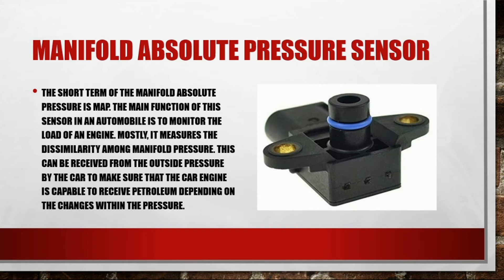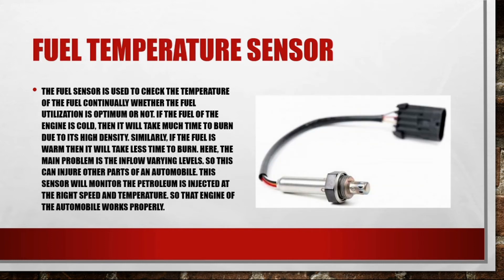The manifold absolute pressure sensor, or MAP sensor, has the main function of monitoring the load of an engine. It measures the difference between manifold pressure and the outside pressure received by the car, to make sure that the car engine is capable of receiving petroleum depending on the changes within the pressure.